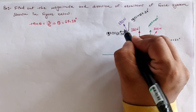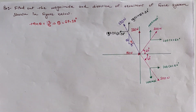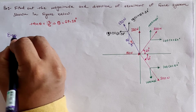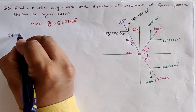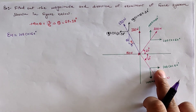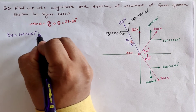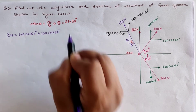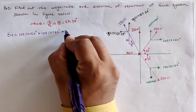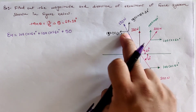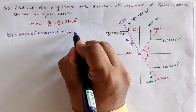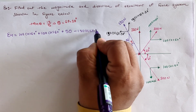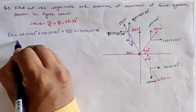Now we calculate the algebraic summation of all horizontal forces, sigma H. The 120 newton load is vertical so it is not included. The first 100 newton load contributes positive 100 cos 60, the second 100 newton load also contributes positive 100 cos 60, and the 50 newton horizontal load contributes positive 50. The 130 cos 67.38 component is in the negative direction, so it is minus 130 cos 67.38. Solving, sigma H equals 100 newton.